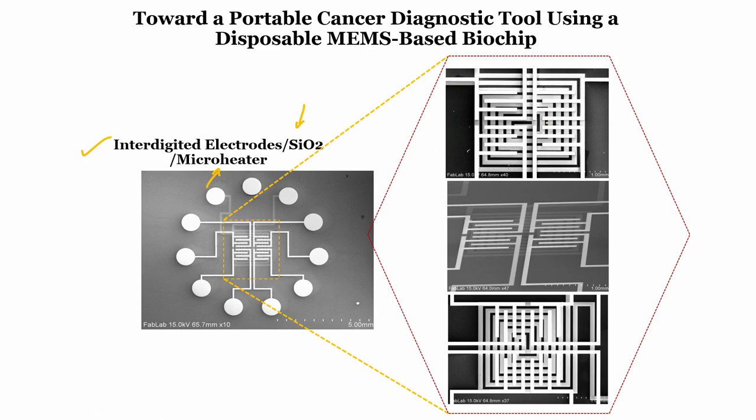In the next module we will see how to deposit a piezoresistive material on these interdigitated electrodes to fabricate a piezoresistive sensor. In this module you have learned how to deposit an insulating layer on a micro heater, how to open the contacts, and how to fabricate interdigitated electrodes over the insulator on the micro heater.